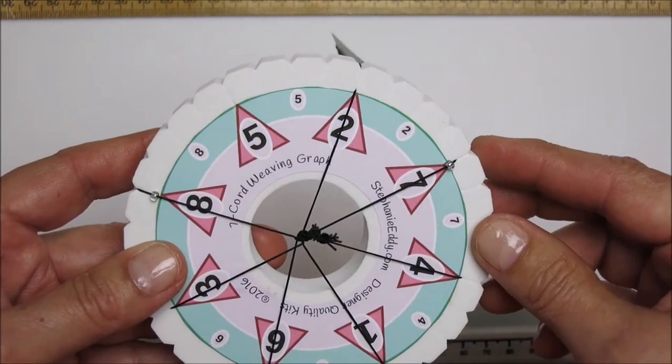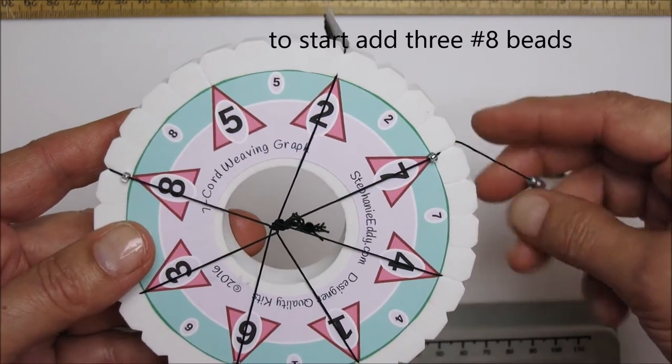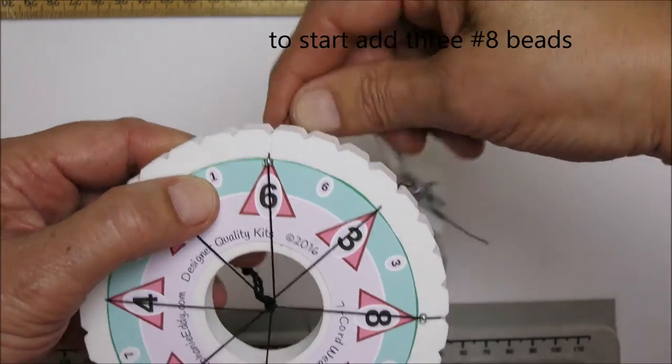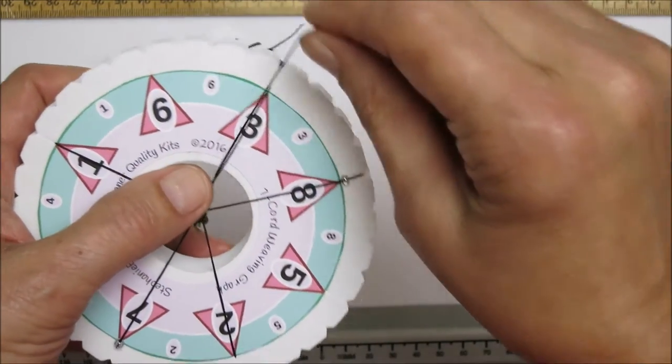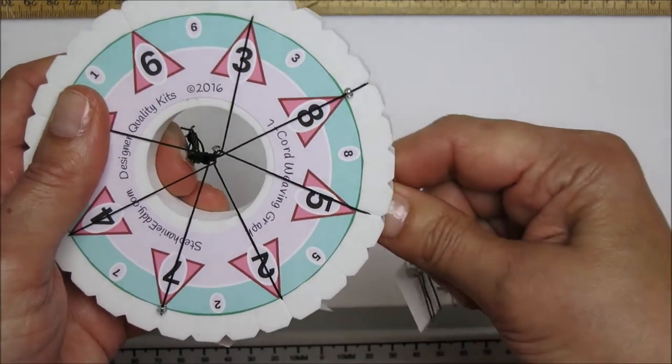The next thing you're going to do is add those three number eight, that's a size eight seed bead. Very important that you have those on. So with number five open, I'm going to pull over number six and drop that bead down underneath the cord on number three and across to number five.